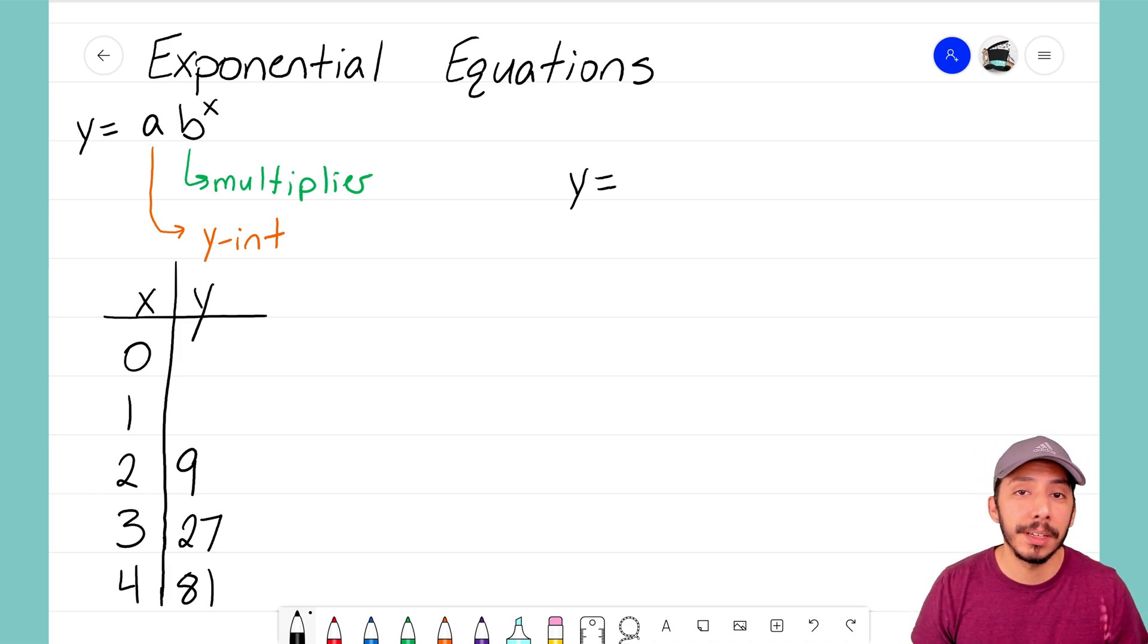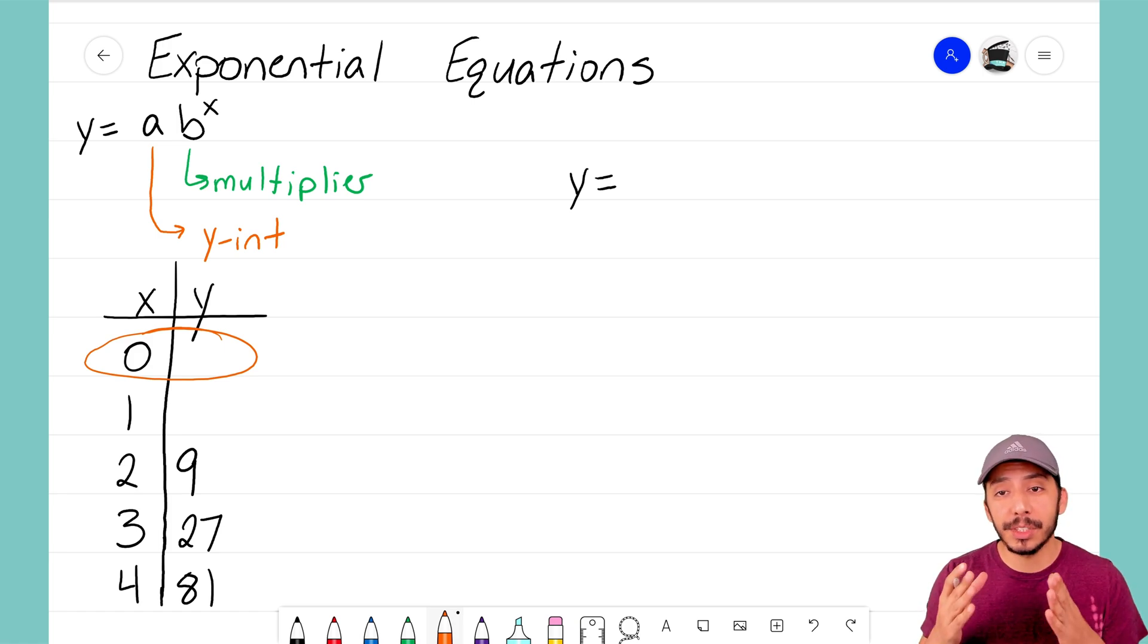There are two big things that we want to determine: what is the y-intercept and what is the multiplier. Now the y-intercept is easy to find on a table. The y-intercept is the zero term, but unfortunately we don't know that value just yet, it's blank. But once we're able to find that out, whatever number is here for the y value at zero, that is our a term. So for right now we have to put that on hold and instead focus our efforts on the multiplier.